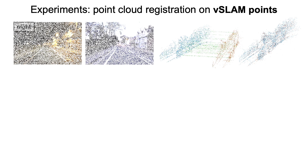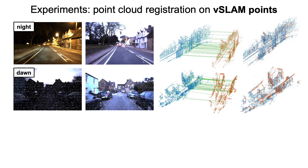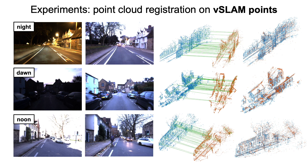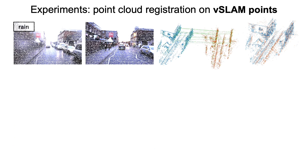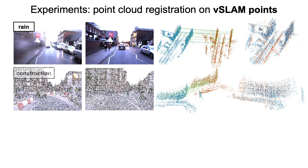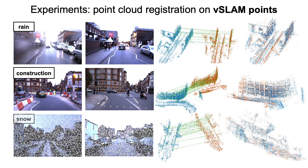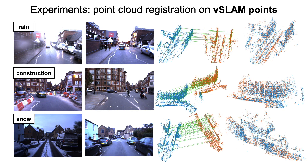Here we show some qualitative results. The testing set covers a wide range of daytime conditions, including night, dawn, and noon. The sequences also cover changes of weather, season, and varying scene layout caused by construction. As can be seen from the figures, the produced 3D reconstructions provide more stable geometric structures and are therefore less affected by image appearance changes. So our 3D descriptor can be helpful for loop closure and relocalization for visual SLAM methods.